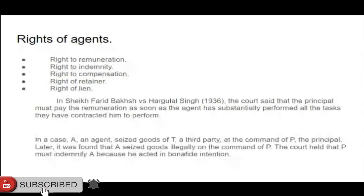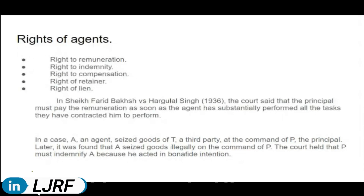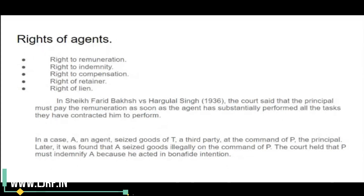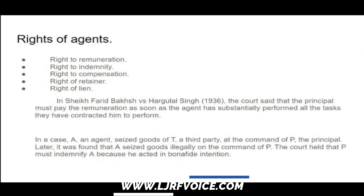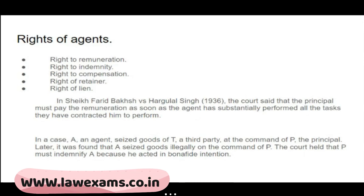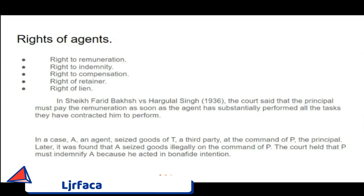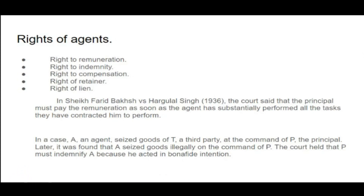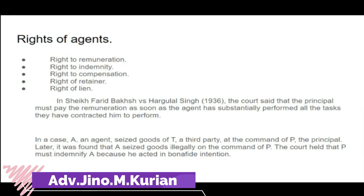Different models will have different points of view with regard to the classification of agents' rights and liabilities of agents. But we will go through the sections themselves — how the sections indicate the rights and liabilities of agents. When you see the rights of agents, you can see that they start from Section 217 onwards. Sections 217 to 219, then in between there are duties, and again rights are discussed in Sections 221, 222, 223, 224, 225.